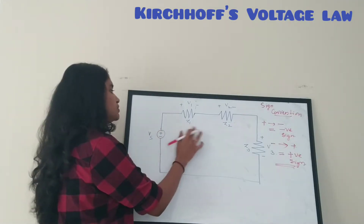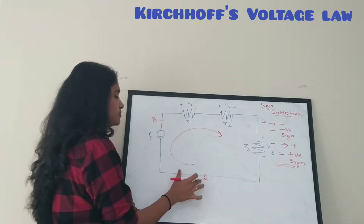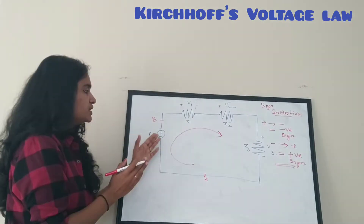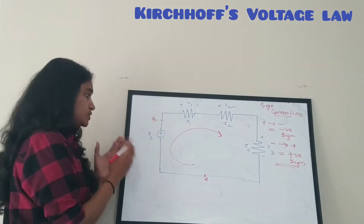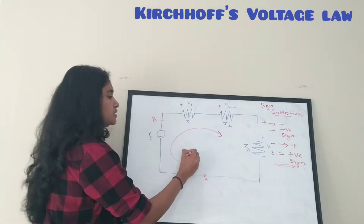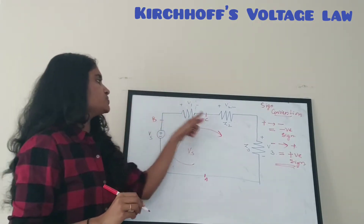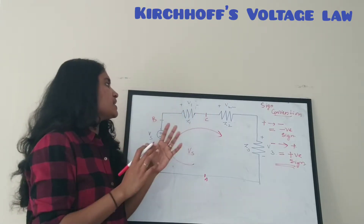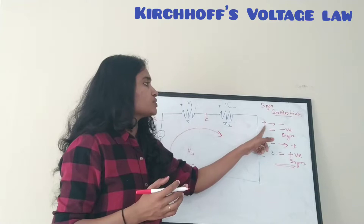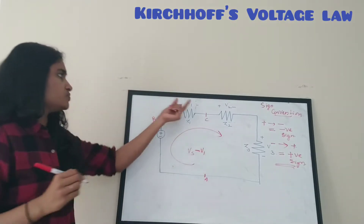I am going to travel around the loop in this direction. Let this point be A and this point be B. Traveling from A to B, I come across the voltage source Vs. Here I am traveling from the negative to the positive terminal, so I take Vs as positive. Now going from B to C, there is element Z1 with voltage V1. I am traveling from positive to negative, so according to the sign convention, V1 is taken as minus V1.